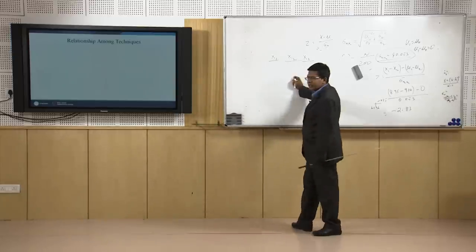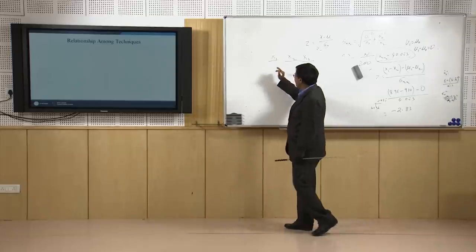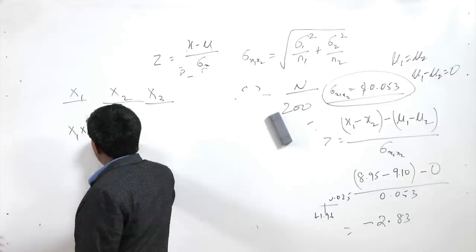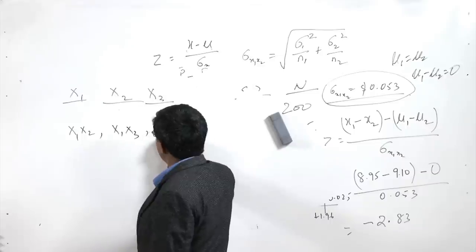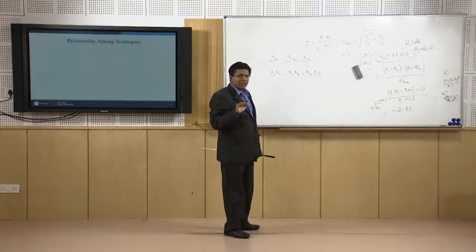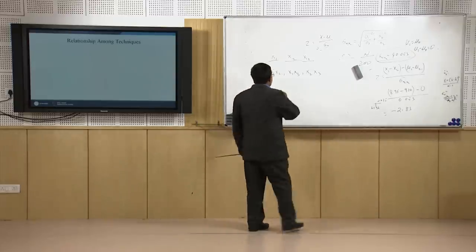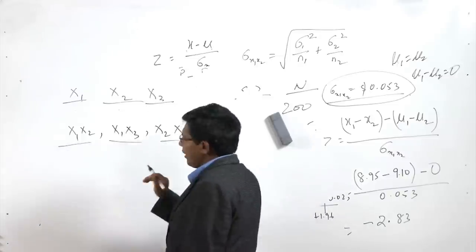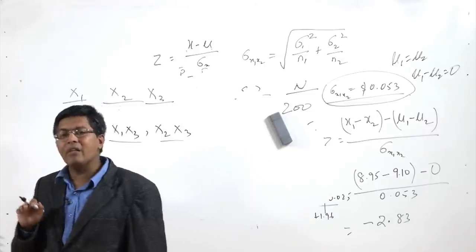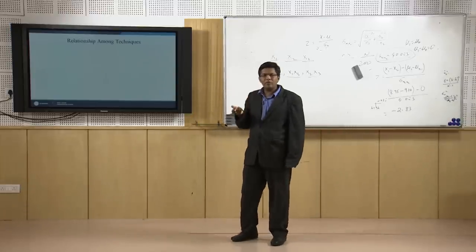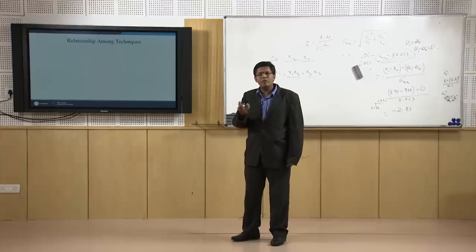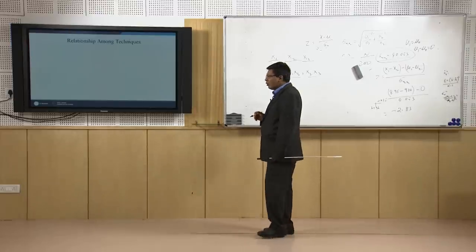One possibility is to run multiple independent sample T-tests: X1 vs X2, X1 vs X3, then X2 vs X3. But this is not justified — you should not do it. Every time you take an alpha of 0.05, the error gets inflated with each additional test. It is very cumbersome and confusing. Imagine having 8 groups — the number of combinations would be enormous.